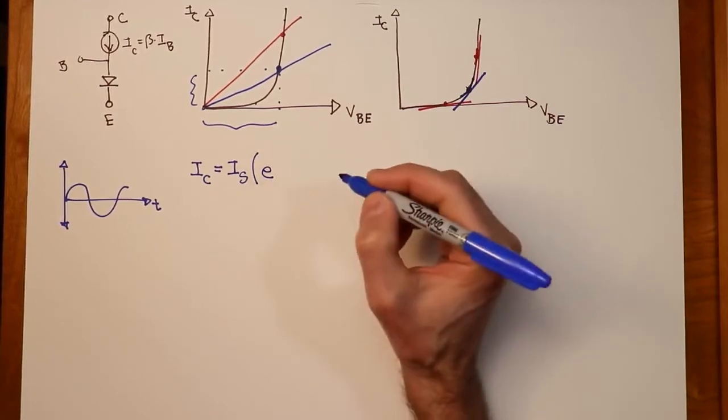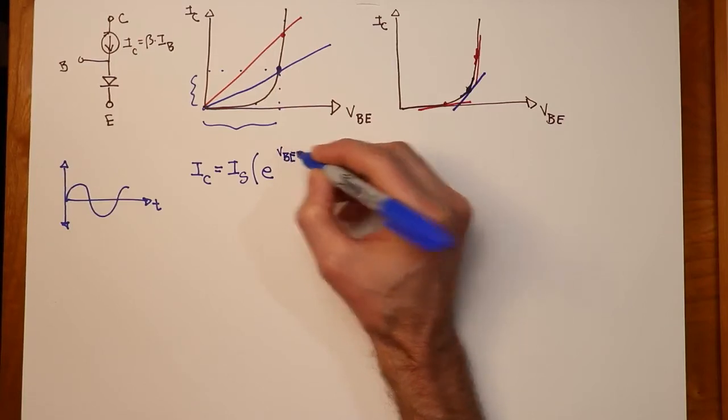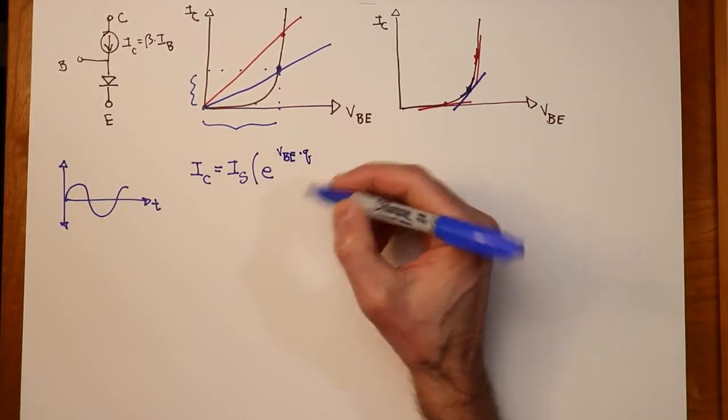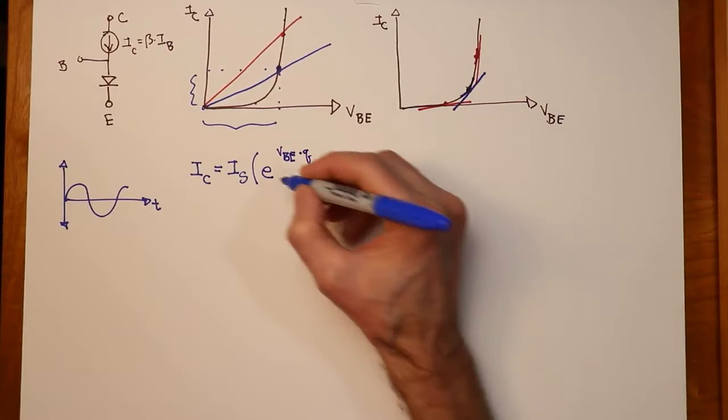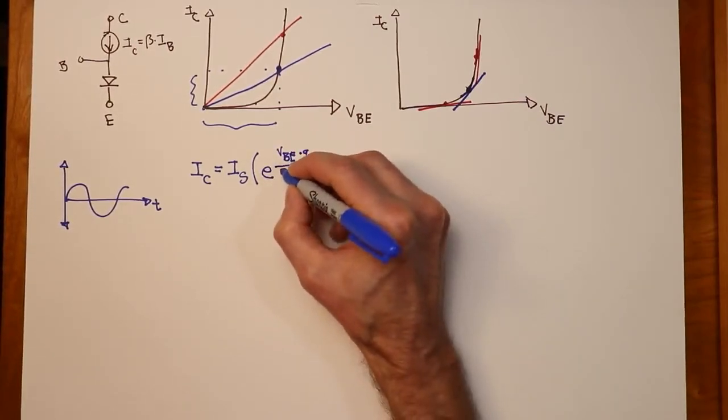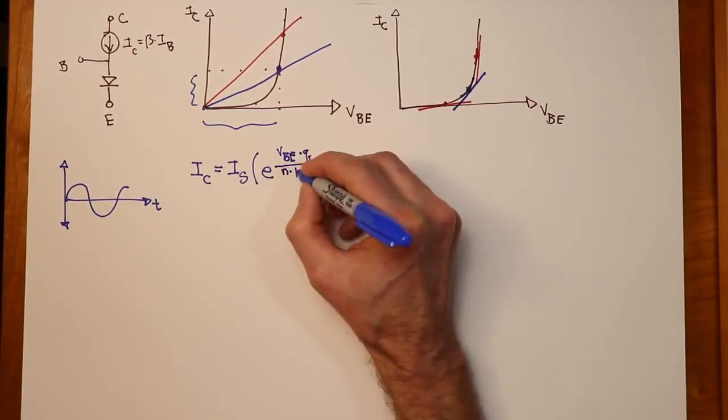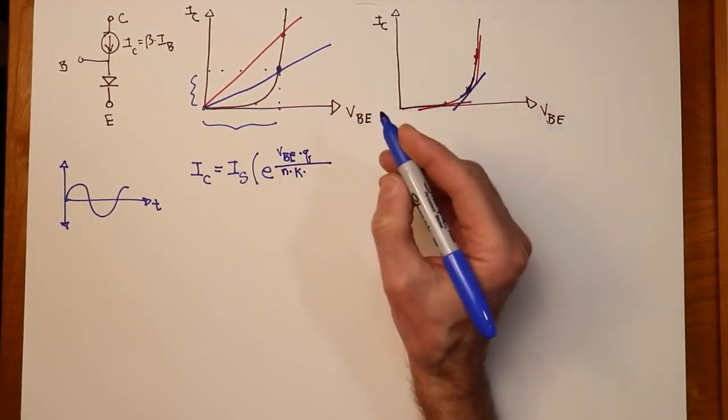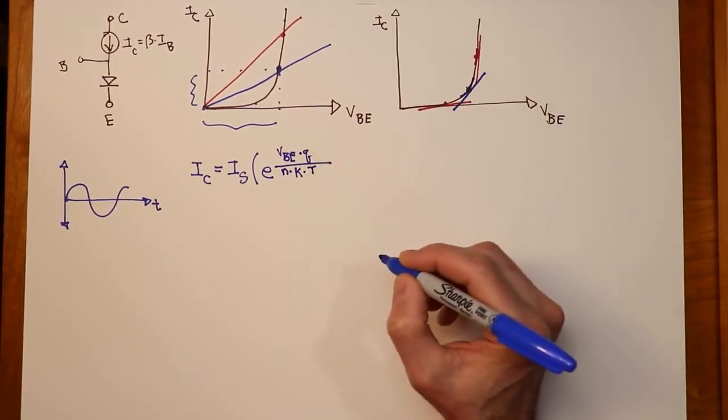your base emitter voltage, times Q, which stands for the charge on one electron, 1.6 times 10 to the minus 19th coulombs, and that is divided by N, which is a quality factor, that's usually somewhere between 1 and 2, K, which is Boltzmann's constant, 1.38 times 10 to the minus 23rd joules per Kelvin degree, and then T, which is the temperature in Kelvins.